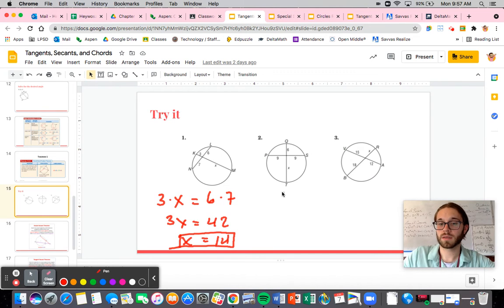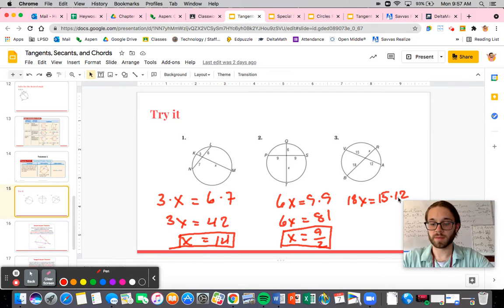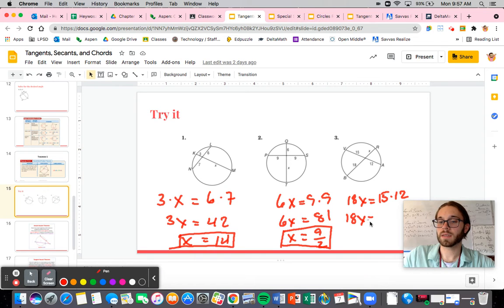Similarly here, we have 6 times x is equal to 9 times 9. Last one here, we have 18 times x is equal to 15 times 12. Let me just quickly do 15 times 12. So that is 180. So I have 18x is equal to 180. So x is just going to be equal to 10. And that's it.